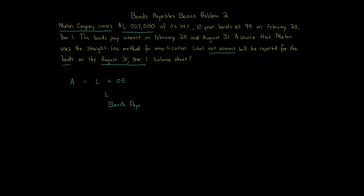The way we report bonds payable — when we're asked for the net amount, not the face amount — we take bonds payable minus a discount if we have a discount, or plus a premium if we have a premium. We also amortize, and this gives us the net carrying amount of bonds, also called the carrying amount or net bonds payable.